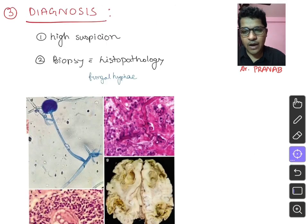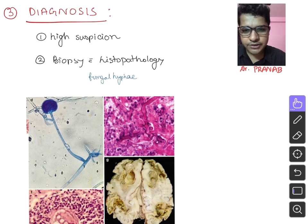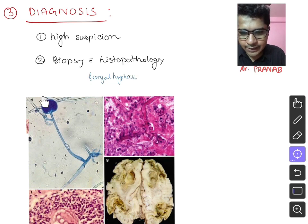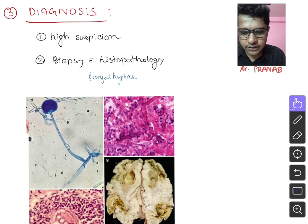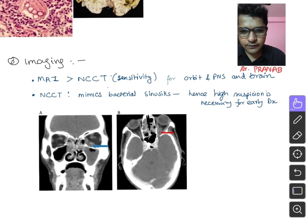For diagnosing a suspected case: all diabetic patients treated with steroids, even with subtle symptoms, must be highly suspected for mucormycosis — otherwise early diagnosis and treatment cannot be achieved. High clinical suspicion is the most necessary part of diagnosis. Definitive diagnosis depends on biopsy and histopathology, where aseptate hyphae can be seen. However, for early treatment, we must rely on imaging techniques like MRI brain, which is most sensitive for detecting orbital and rhinocerebral mucormycosis.